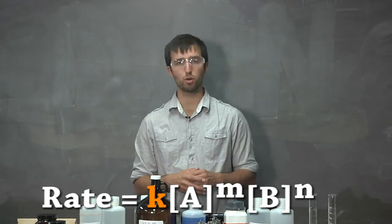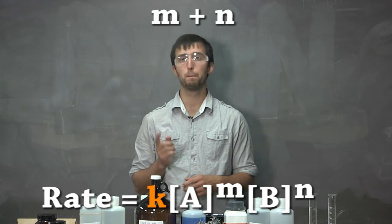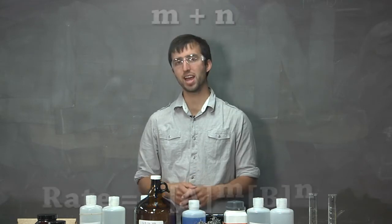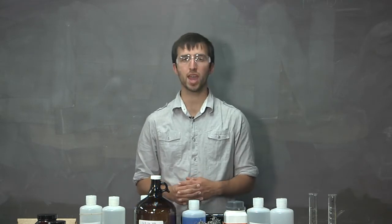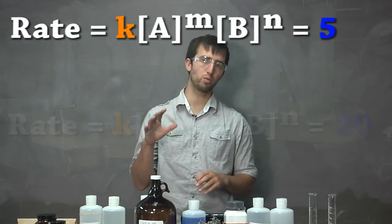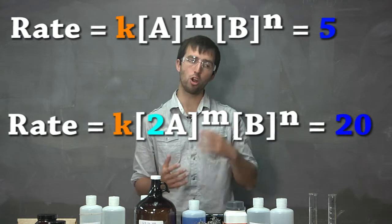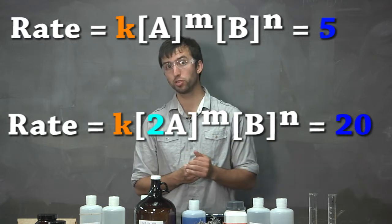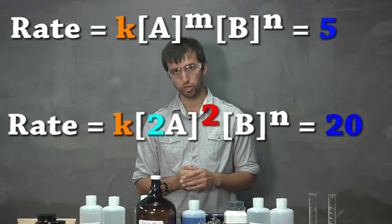then the rate of the overall reaction is M plus N. To find out our rate law for a particular reaction, we have to essentially play with the products. If we double reactant A and our product quadruples, we know that the power is 2.